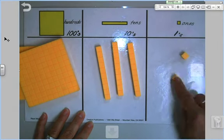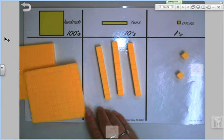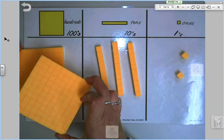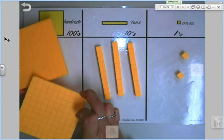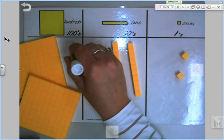So looking at what I have here, how many hundreds flats do I have? I have one hundreds flat and I have two hundreds flats. So this is two hundreds.